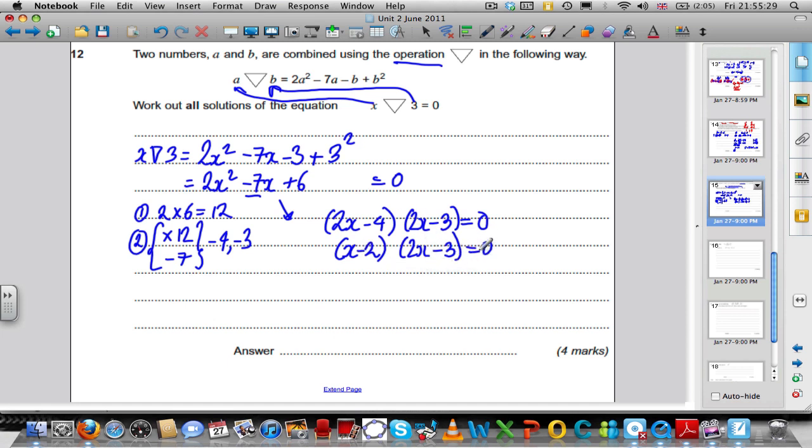Two numbers multiply together to give 0, so either the first number, X minus 2 is 0, or the second number, 2X minus 3, is equal to 0.